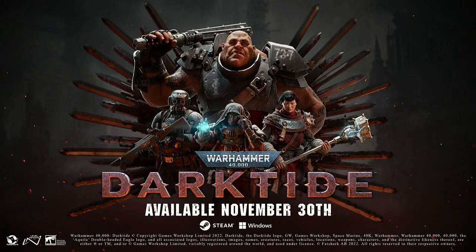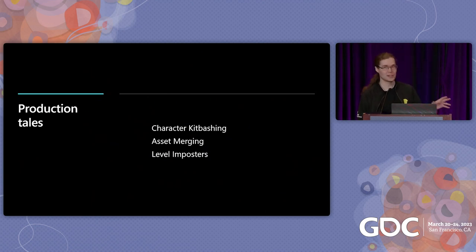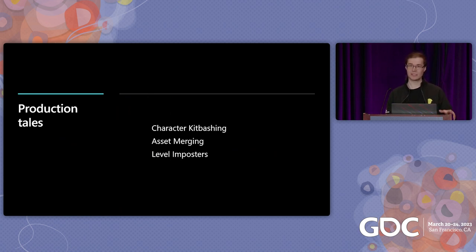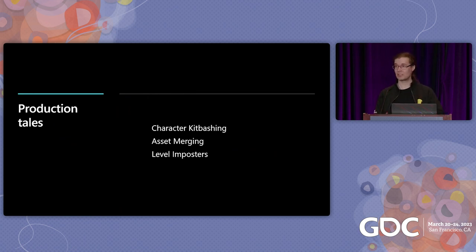Of course, the game is already out — this is an old slide. It's an amazing game and I've had so much fun with it. So now we've looked at asset optimization from an individual asset point of view, how to solve this for one asset. Now let's approach this from a game production point of view — how to solve asset optimization at scale.